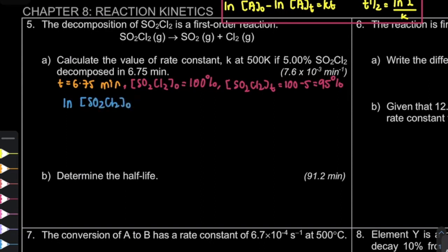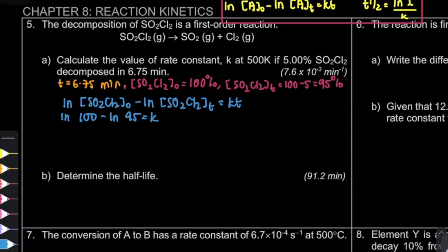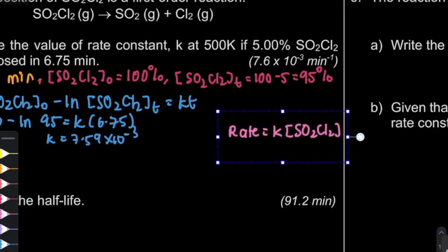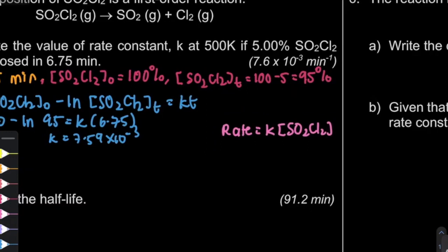Substituting the values — generally we say reactant is A, but when we have the specific reactant from the given equation we insert that species. We get K = 7.59 × 10⁻³. For the unit, it depends on the rate law; if you can't memorize it, we can derive it together.